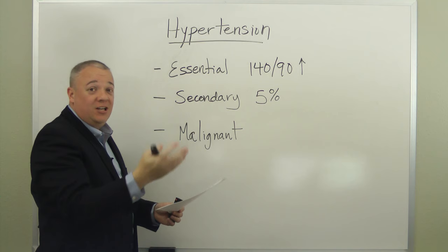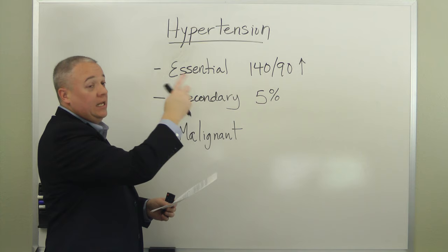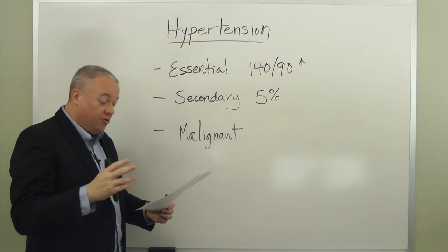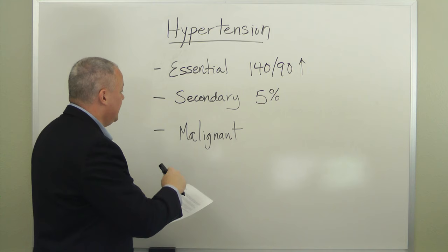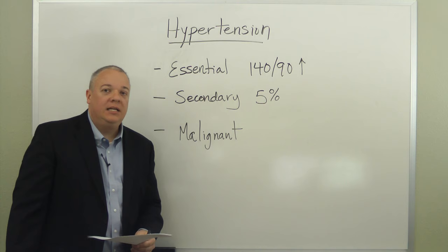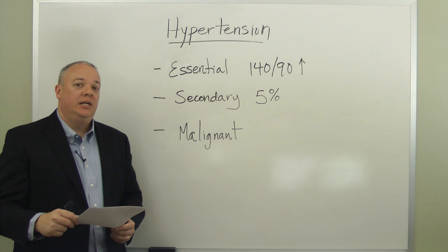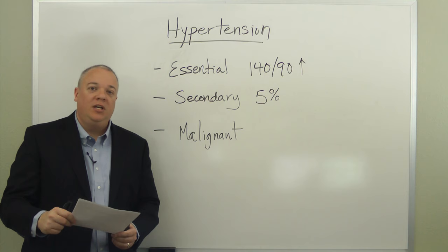To summarize: essential hypertension is the most common — three separate readings of 140/90 or higher with no other medical cause. Secondary hypertension affects 5% and is usually due to another disease like renal disease or renal artery stenosis. Malignant hypertension is life-threatening and requires immediate treatment, bringing blood pressure down slowly — no more than 25% over a 1–2 hour period.